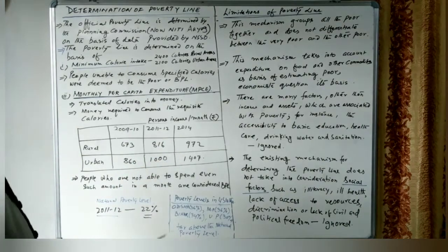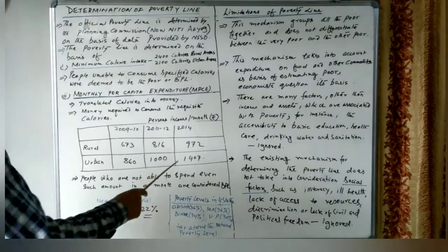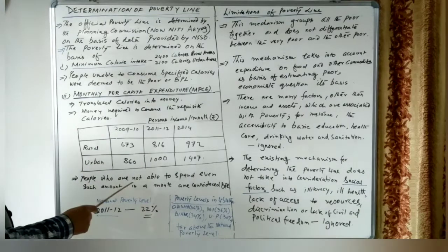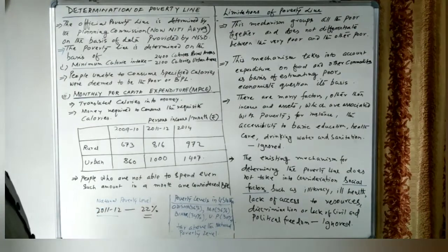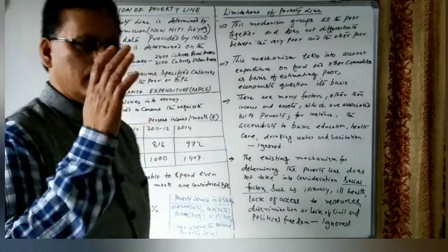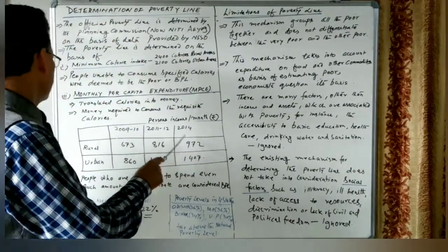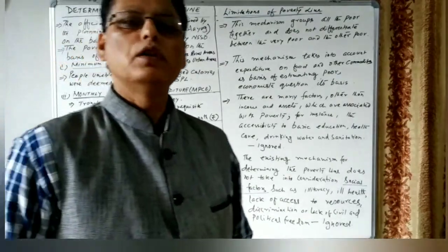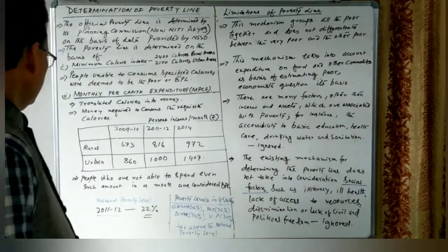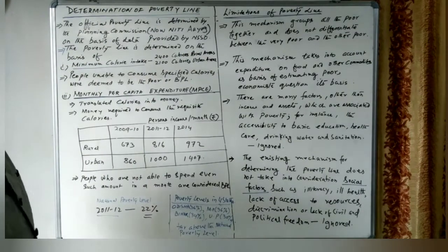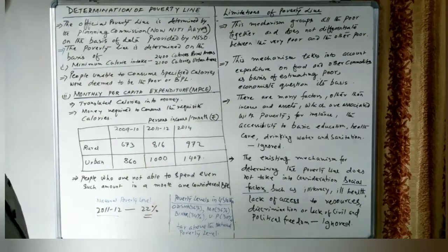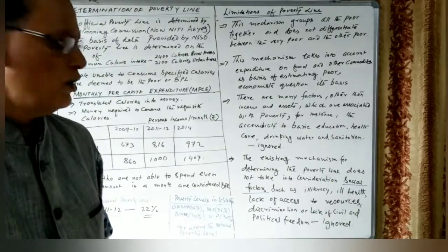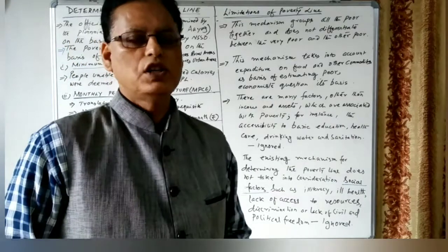At 2014 prices, 972 rupees per month is needed in rural areas and 1407 rupees per month in urban areas. People who are unable to spend even this amount in a month are considered below the poverty line. According to the 2011-12 data from the Planning Commission, about 22 percent of India's population was below the poverty line.